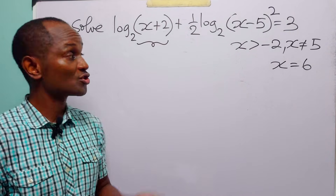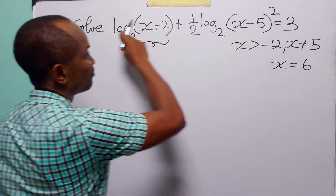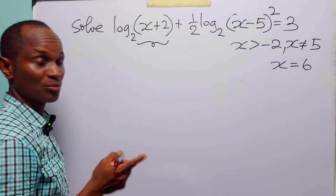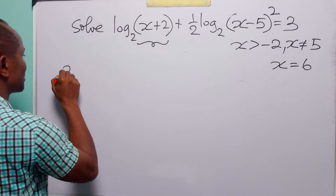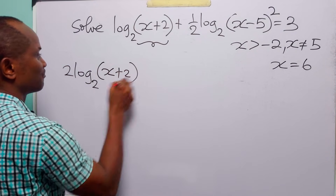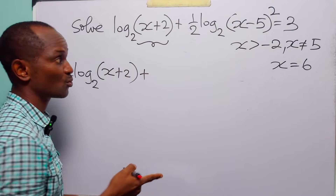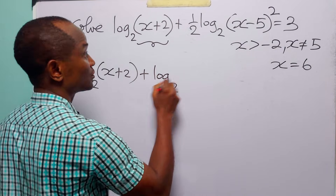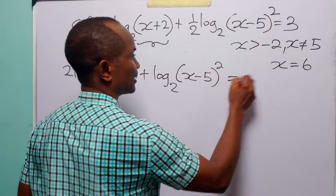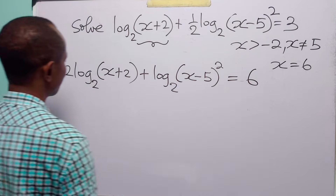Now the correct way to solve this logarithmic equation: because of the one-half, we multiply through the entire equation by 2 to get rid of the fraction. When we do that, 2 times log to base 2 of x plus 2, plus 2 times one-half gives 1, so we have log to base 2 of x minus 5 squared, and 3 times 2 equals 6.